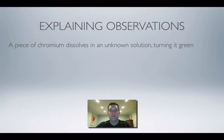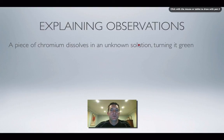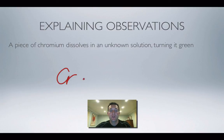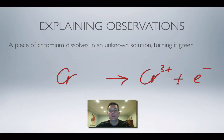The last example involves explaining an observation using a half equation. A piece of chromium is dissolved in an unknown solution and the solution turns green. Looking at a colour chart, a green ion is the chromium 3+ ion, so we're starting with chromium metal and ending up with Cr³⁺. Atoms balance. The right side is more positive, so we put three electrons on the right. The chromium lost electrons — it was oxidized to a chromium 3+ ion.